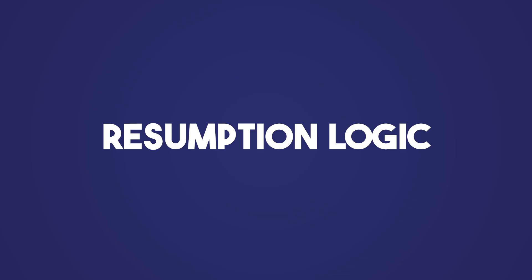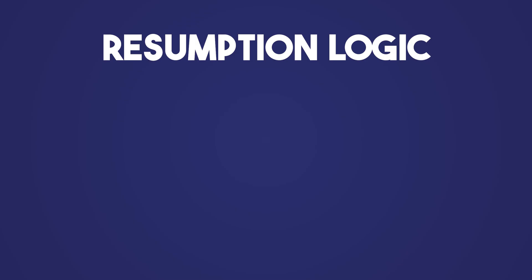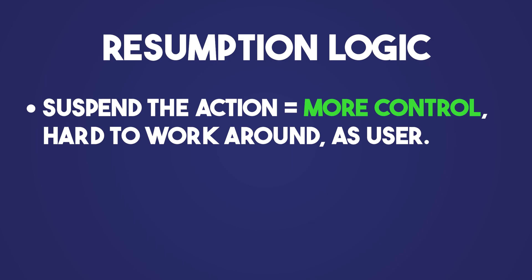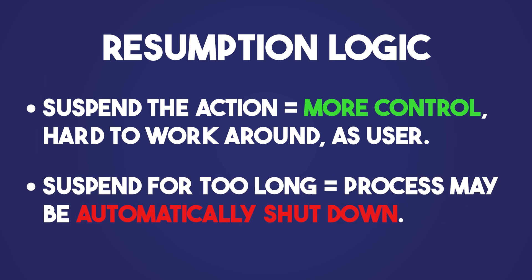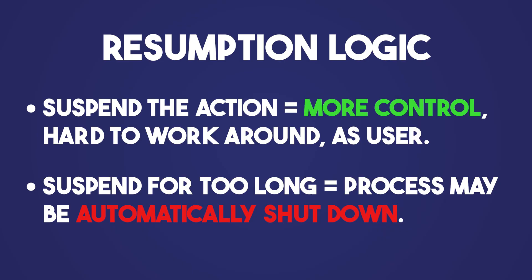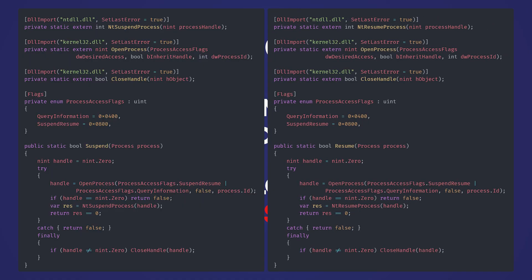And finally, the resumption logic. When the player meets the goal, the system gracefully resumes the original action. To be fair, I'm still debating this one. On the one hand, if you suspend the action, you have way more control over the user — it's way harder for them to work around it. But, and this is a pretty big one, if Windows notices the process hangs too long in an uninitialized step, it might actually cancel the operation. So I'll leave the suspend logic in the project, but for the final product I went with the safer route of simply covering it all with the overlay and letting the action complete uninterrupted in the background.